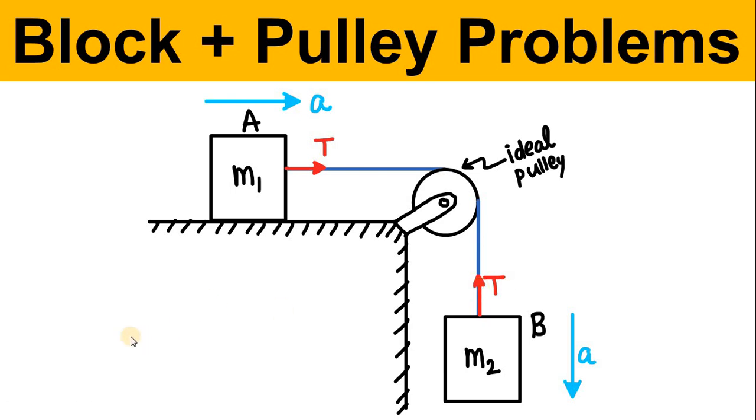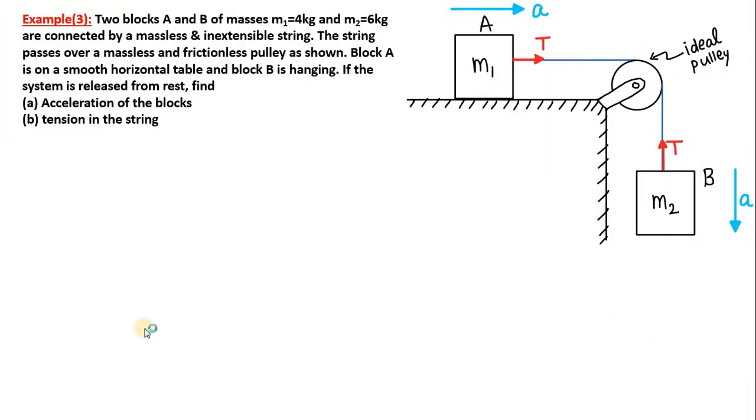Let's proceed to the next page. Here the question: Two blocks A and B of masses 4 kg and 6 kg are connected by a massless and inextensible string. The string passes over a massless and frictionless pulley as shown. Block A is on a smooth horizontal table - this is smooth, no friction - and block B is hanging. If the system is released from rest, find the acceleration of the blocks and the tension in the string.